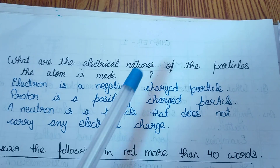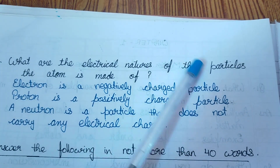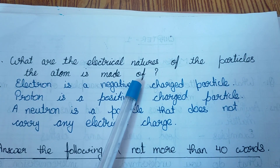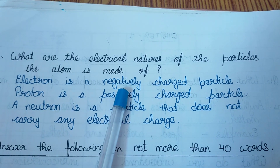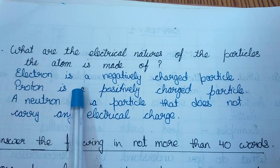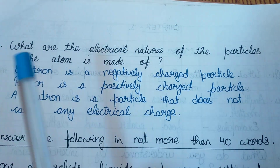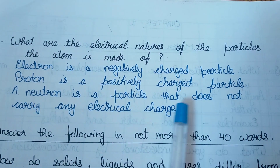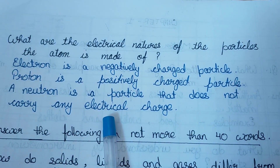Question number 6: What are the electrical natures of the particles the atom is made of? Answer: Electron is a negatively charged particle. Proton is a positively charged particle. A neutron is a particle that does not carry any electrical charge.